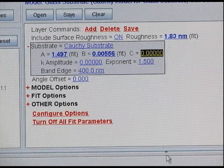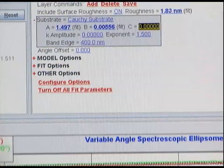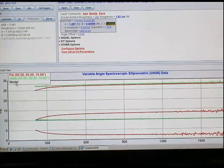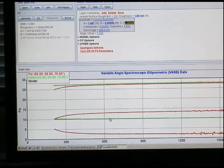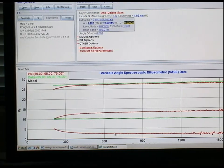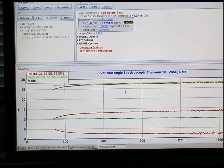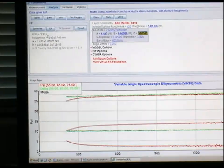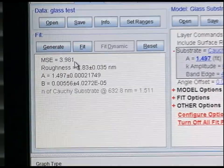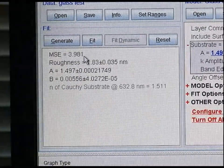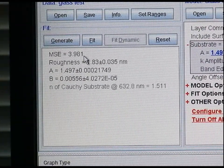If we look at our psi and delta data with our fit in the black line, we see that the model very nicely fits our data. Another way to look at this is to see that the mean squared error of our fit given in the left-hand corner here is very low. We have an MSE value of 3.981, which is very low indicating we have a nearly perfect fit of generated model to our experimental data.